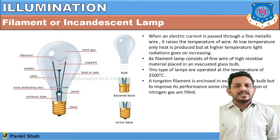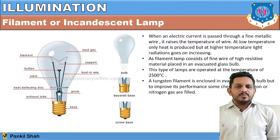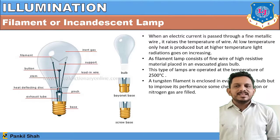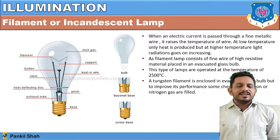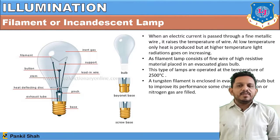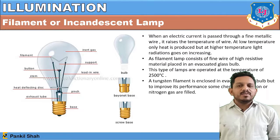Now let's discuss different types of lamps. The first is the filament or incandescent lamp, generally used at domestic supply. In its construction, there is a base, a pinch, an exhaust tube, a heat-deflecting disc, leading wires, and supports. Between the two wires and supports is a filament, which is the most important component.